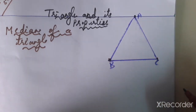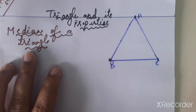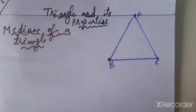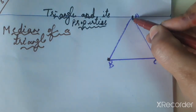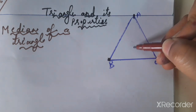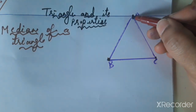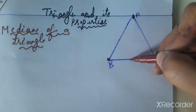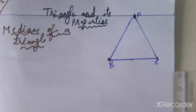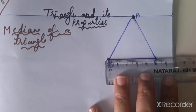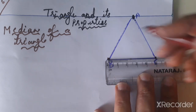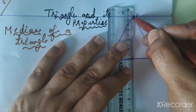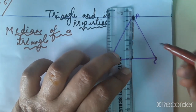Next is the median of a triangle. A median of a triangle is a line segment joining a vertex to the midpoint of the opposite side. A line segment means a line with a definite endpoint. For example, here we have a side that is exactly five centimeters, so the midpoint is at 2.5 centimeters — the middle of the line.